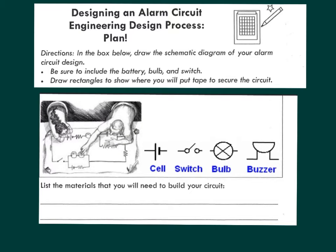How will you attach the materials to the circuit? The following are different pictures that can be labeled for your different terms: cell, switch, bulb, and buzzer. List the materials that you will need to build your circuit.